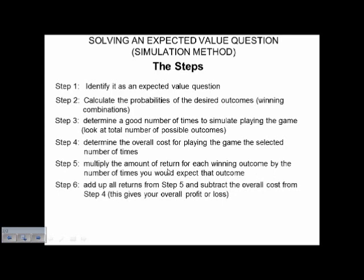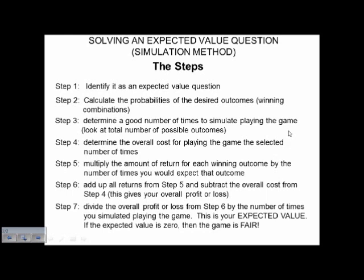We're then going to add up all the returns that we would get from step 5, for all the combinations that pay us back. Usually you're going to have more than one winning combination, at least in some of the more advanced expected value questions. So we add up all the returns we expect to get back, then subtract from our overall cost — this gives us our net overall gain or loss. The last thing is to divide this overall gain or loss by the number of times we simulated playing it, giving us an average amount that we're up or down for each play, which is the expected value.